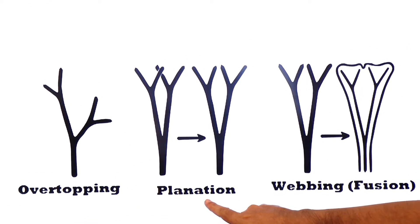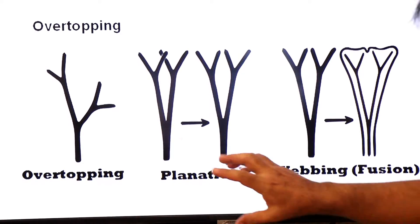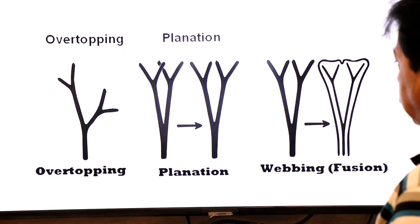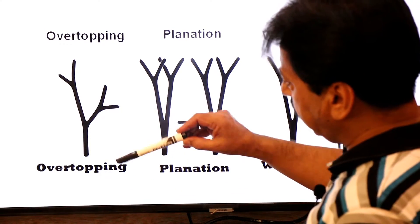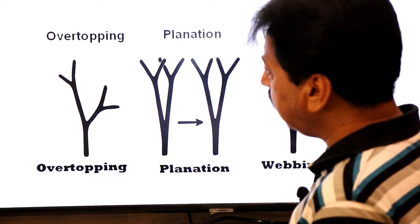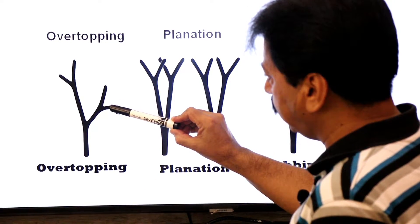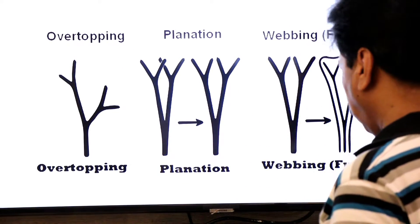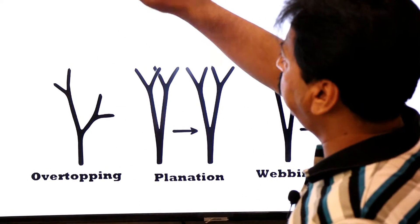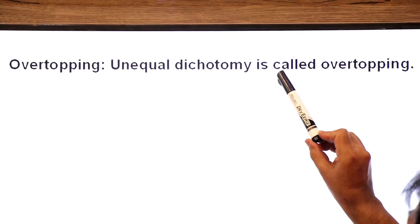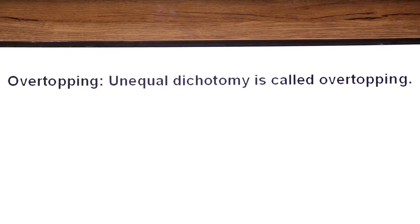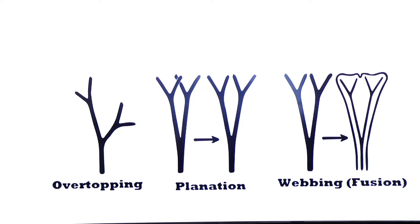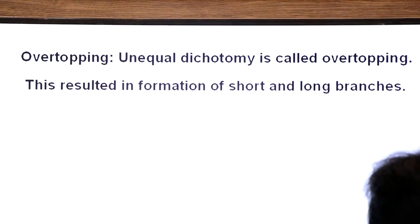The first step is overtopping. Looking at the diagram, you can see unequal dichotomy. Unequal dichotomy is called overtopping. One dichotomy branch is larger while the side branch — the other dichotomy — is shorter. This resulted in the formation of short and long branches.